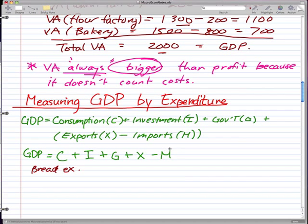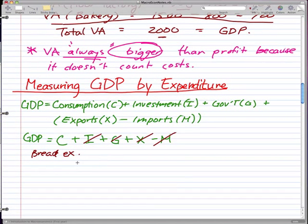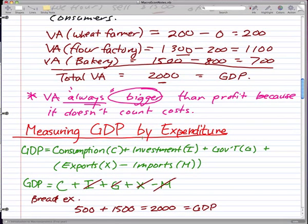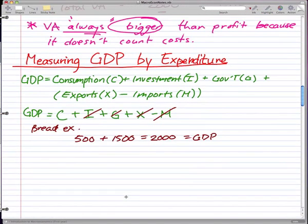Since we haven't talked about imports, exports, government, or investment yet, and we didn't exemplify those in our example, we'll just cross those out. All we have left is consumption. As we've seen in our example, we consumed $500 worth of flour and $1,500 worth of bread, so in total that is $2,000, and that's how we get our GDP. Simple as that — compare that to all the work we did in the last video. It's a lot of work saved.